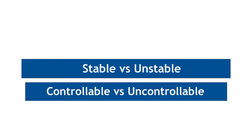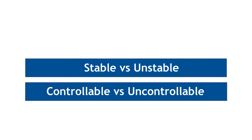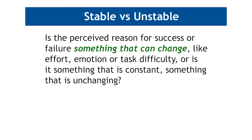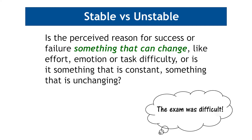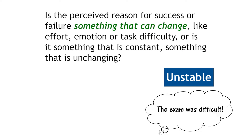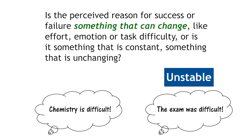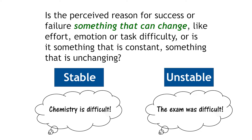The next two dimensions relate to how stable and controllable the factors are. Regarding stability, is the perceived reason for success or failure something that can change, like effort, emotion, or task difficulty? Or is it something that is constant and unchanging? For example, if a learner thinks they failed a chemistry exam because the exam was difficult, that factor would be considered unstable — maybe the next exam will be easier. But if they think chemistry is a difficult subject, that factor is considered stable, as the subject will continue to be difficult.